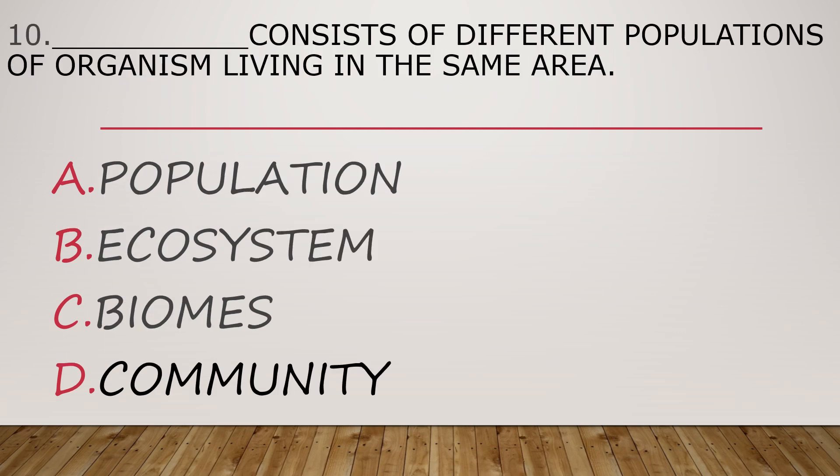Last number, number ten. Blank consists of different populations of organisms living in the same area. A. Population. B. Ecosystem. C. Biomes. D. Community.